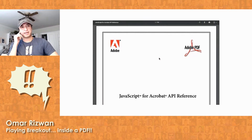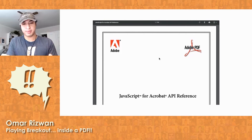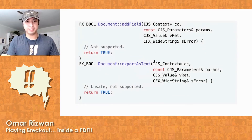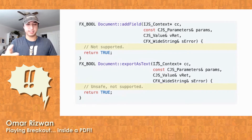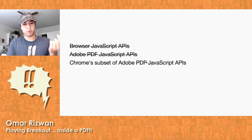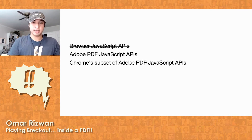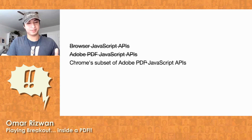But it actually gets even weirder than that to make this Breakout game, because I've been showing you these PDFs in Chrome and this reference is for Adobe Acrobat — what you're supposed to do if you're a PDF viewer. But Chrome only implements a weird subset of these APIs. I went and dug around in the Chrome source code and found the places where they implement the PDF functions you can call from PDF JavaScript. It turns out a lot of them are just not implemented by Chrome, for security reasons or because Google didn't bother since they weren't important. So we're in this really weird situation where we're not using normal browser APIs, not even the specified PDF JavaScript APIs — we're using Chrome's weird subset of Adobe's weird PDF JavaScript APIs.